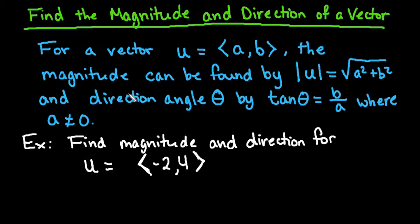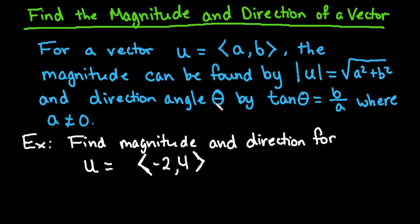For this video, what I want to do is show you how to find the magnitude and direction of a vector. So for any vector u with endpoints at a, b, the magnitude — which is basically the length of the vector — is equal to the square root of a squared plus b squared. This comes from the Pythagorean theorem where we solve for the hypotenuse. The direction angle theta can be found using the relationship tangent theta equals b divided by a, where a cannot equal zero.